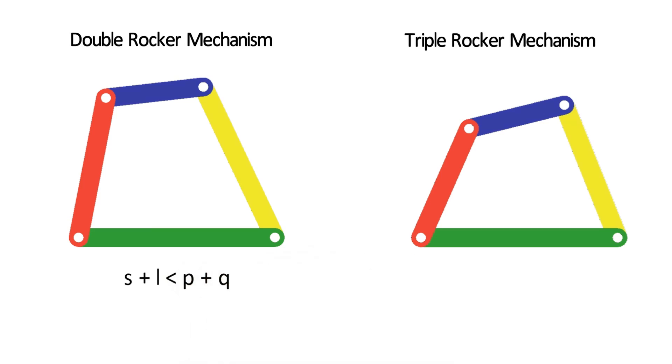On the other hand, triple rocker mechanism is a non-Grashof linkage, for which the sum of the links of the smallest link and the largest link, is greater than the sum of the links of other two links.